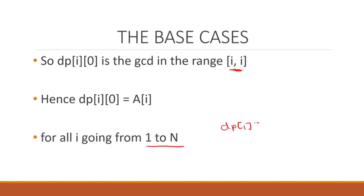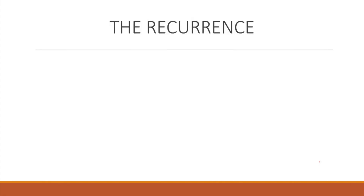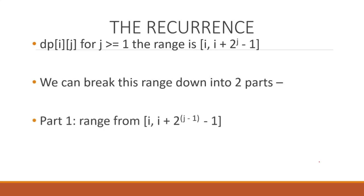Now for the recurrence. Let's recall our range from i to i + 2^j - 1. To find the recurrence we split this range into two parts. The first part goes from i to i + 2^(j-1) - 1. I'll explain why we chose exactly this endpoint in just a moment, so hold on.